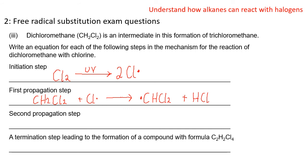The second propagation step takes the newly formed organic radical molecule, CHCl₂ dot — you will be penalized if you don't include those dots — plus a new chlorine molecule, to give us CHCl₃ plus a chlorine radical. And those are our two propagation steps.